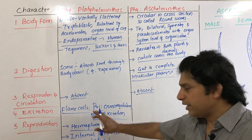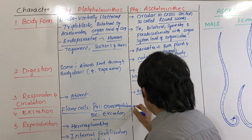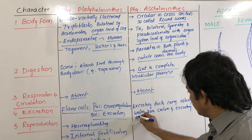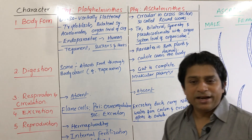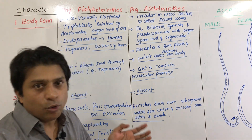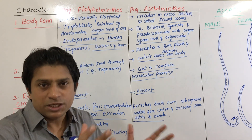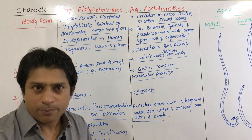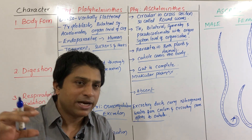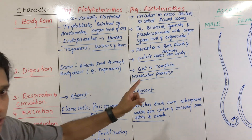Excretion in Aschelminthes differs from Platyhelminthes — instead of flame cells, excretory ducts (canals) are present. These canals collect nitrogenous waste from the pseudocoelom and carry it to the excretory pore, through which it is released to the outside.